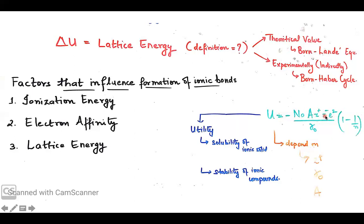Z⁺ and Z⁻ are the charges on the positive and negative ions. R₀ represents the inter-atomic distance between the opposite ions. N is called the Born exponent, which comes from the nature of the ions leading to the formation of the ionic compound. This equation can be used to theoretically calculate the lattice energy.